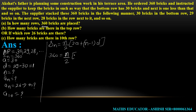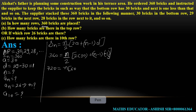We need to find the value of n. Substituting: 360 = n/2 × (2×30 + (n−1)×(−1)). Multiplying both sides by 2 gives 720 = n × (60 + (−1)(n−1)), which simplifies to 720 = n × (61 − n), giving us 720 = 61n − n².